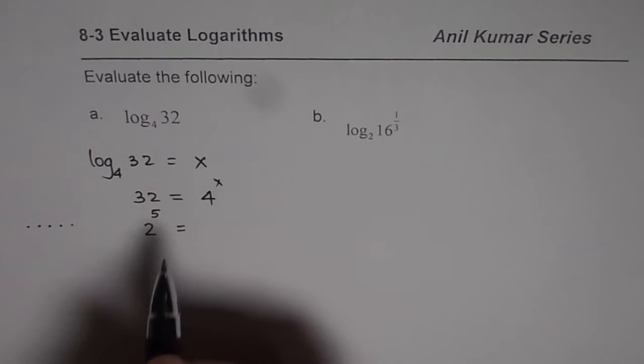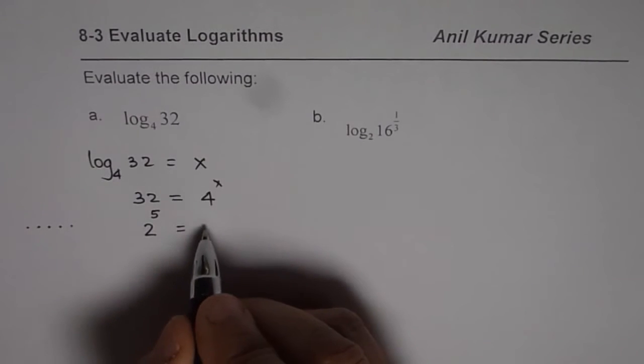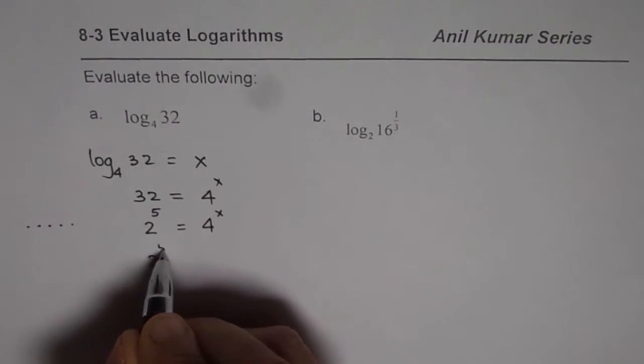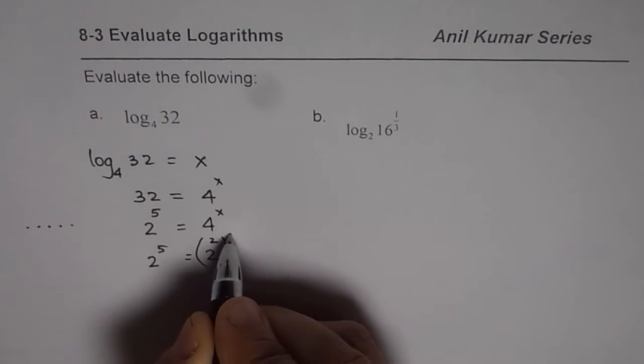So write it in exponent form. On the other hand, we have a base of 4. Now, that base of 4 should now be written as base of 2, right? So let us go one more step. 4 is 2 square. We will say 2 square to the power of x.